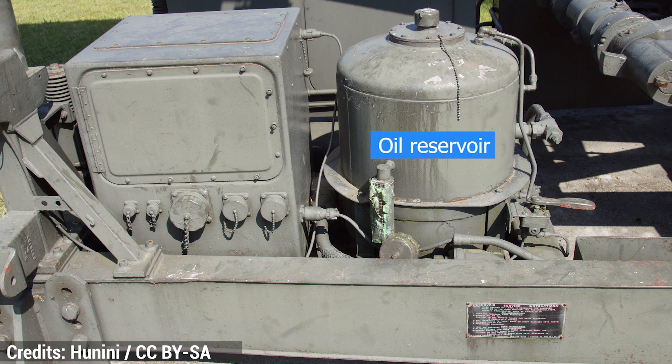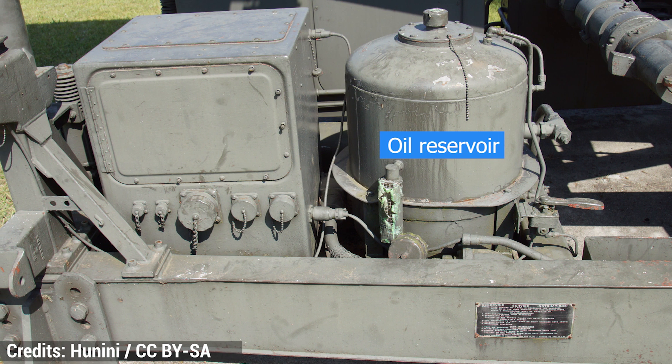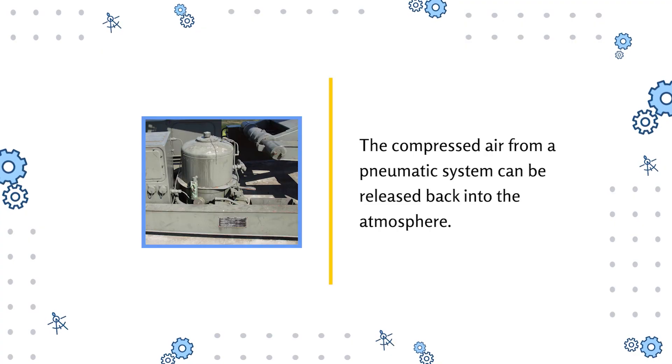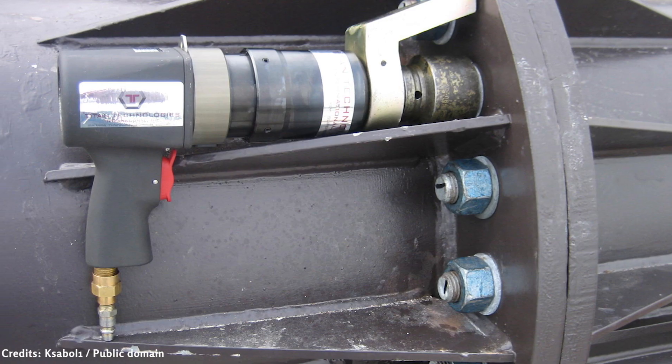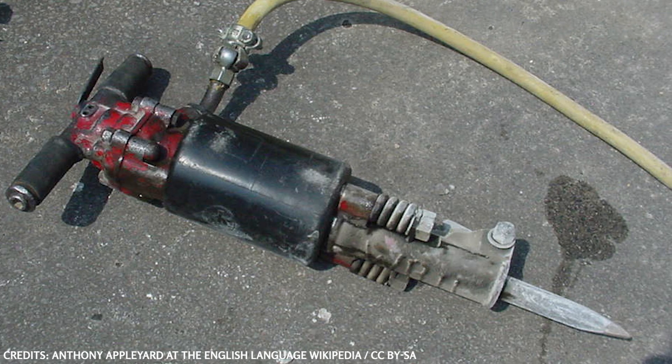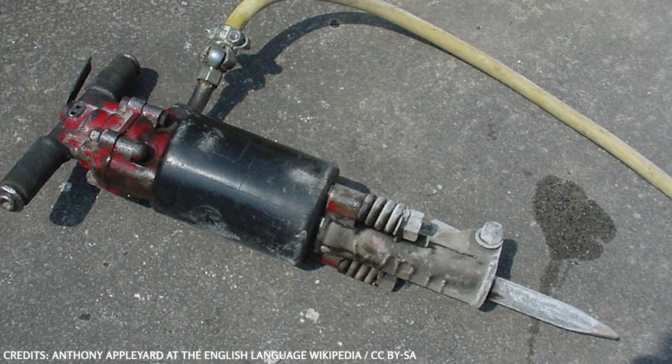As we saw, in a hydraulic system, the working fluid or oil is restored into the reservoir after working. Since compressed air is used in a pneumatic system, it can be exhausted back into the atmosphere without any concern. Pneumatic systems, such as a pneumatic wrench or pneumatic drill, can perform work much faster due to increased precision.